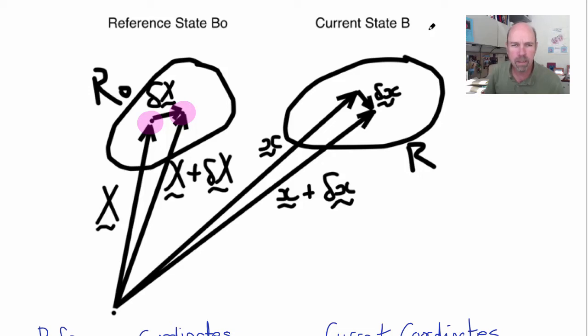Welcome back to BE110 Continuum Mechanics. Today we're going to consider the kinematics of a moving material region, R0 in the reference state of the body B0, that moves and changes shape to become R in the current state of the body B.